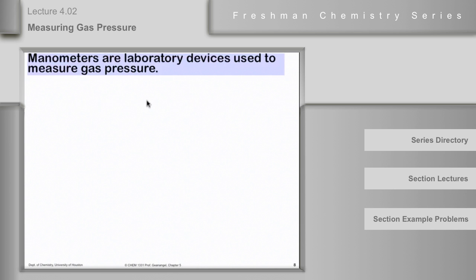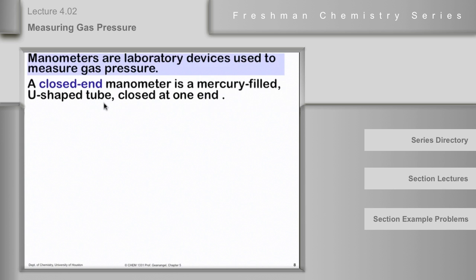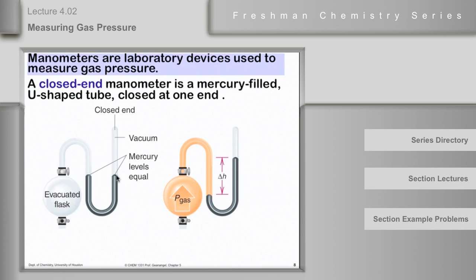Gas samples in the laboratory also may need to have their pressure measured, and the devices that are used to do that are not barometers per se. They're called manometers - this means something like pressure meter. They're laboratory devices to measure gas pressure. The simplest ones are of two types. One's called a closed-end manometer, which has a mercury-filled U-shaped tube that's closed at one end and connected to a bulb.